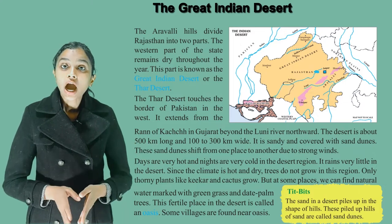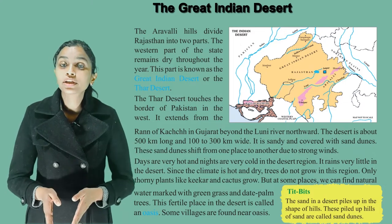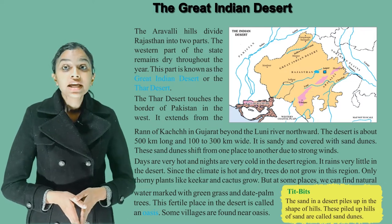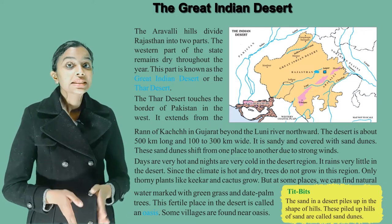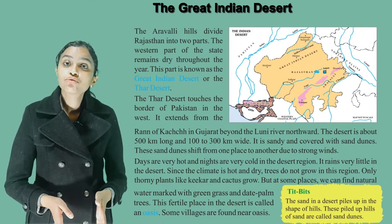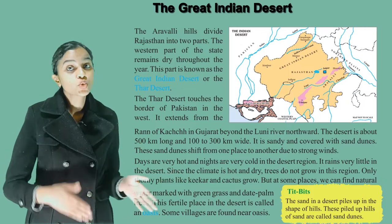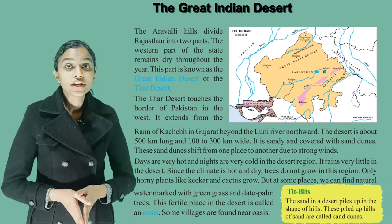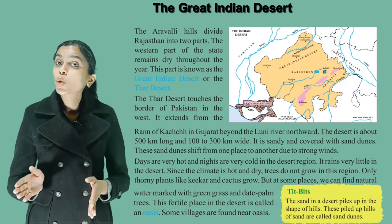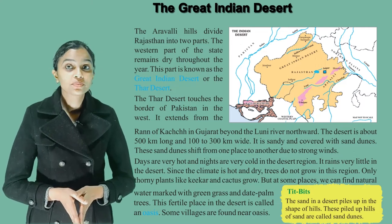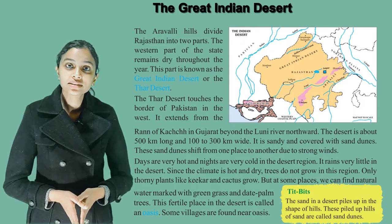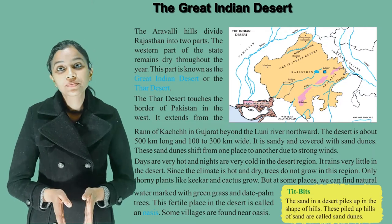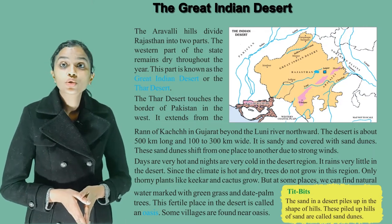The desert is about 500 kilometres long and 100 to 300 kilometres wide. It is sandy and covered with sand dunes. These sand dunes shift from one place to another due to strong winds. Days are very hot and nights are very cold in the desert region.